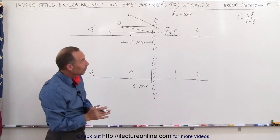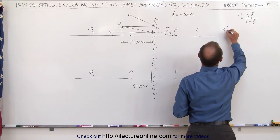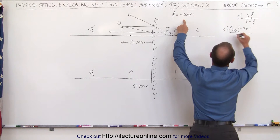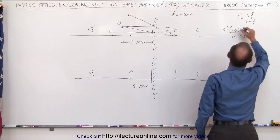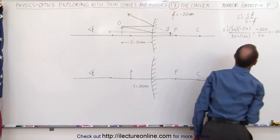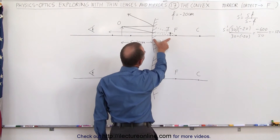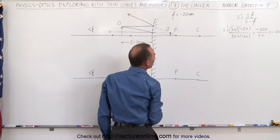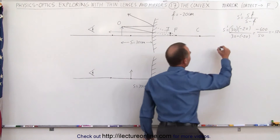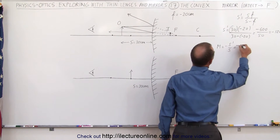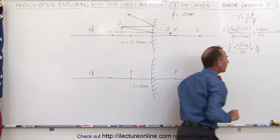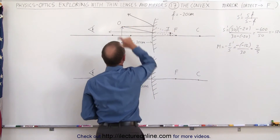To find the exact location of the image, we use the mirror equation. S' equals S times F over S minus F, so in this case S is 30 centimeters times the focal length of minus 20, divided by 30 minus minus 20, which equals minus 600 divided by positive 50, which is minus 12 centimeters. That means the image is 12 centimeters away from the mirror and behind the mirror, as indicated by the minus sign. This minus means it's behind the mirror, therefore it's a virtual image. The magnification equals minus S' over S, which is minus times minus 12 over 30, equal to 2 over 5 — so the image size is two-fifths the size of the original object.